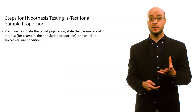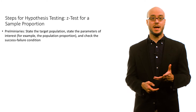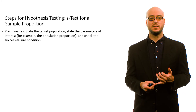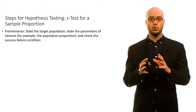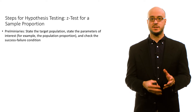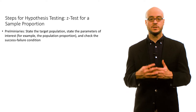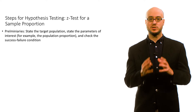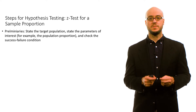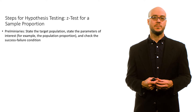We conduct a one-sample z-test for a sample proportion to test these kinds of claims, and there are several steps. First, the preliminaries include stating the target population — what population are you testing? Is it all people living in the United States, all people living in Germany, or some subset, like only employed people or all women? The first step is to state your population.